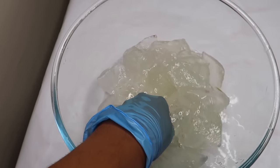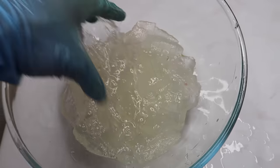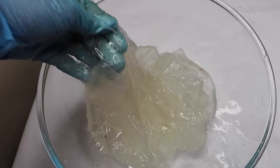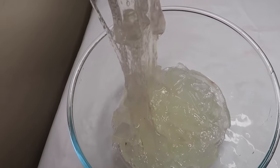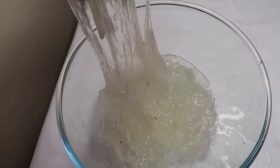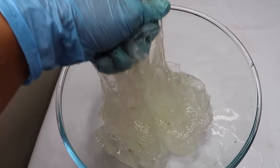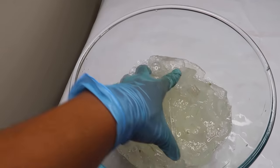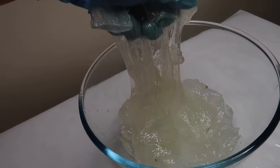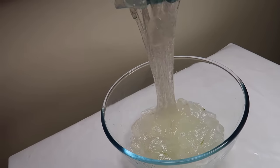Here is all the gel I collected from the leaves. If you don't have any blender or mixer, you can mix or squeeze it with your hands for several minutes to extract the gel. Then put it into a strainer or a filter bag to separate the gel from the aloe vera pieces.